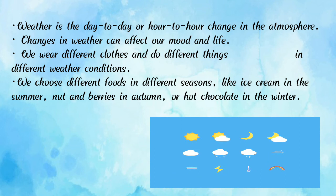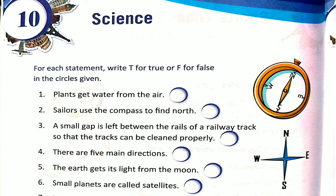Children, you all understand about science unit number 10. Now we are going to do some exercises. For each statement, write T for true and F for false. Number 1: Plants get water from the air. This is false — plants get water from the roots.